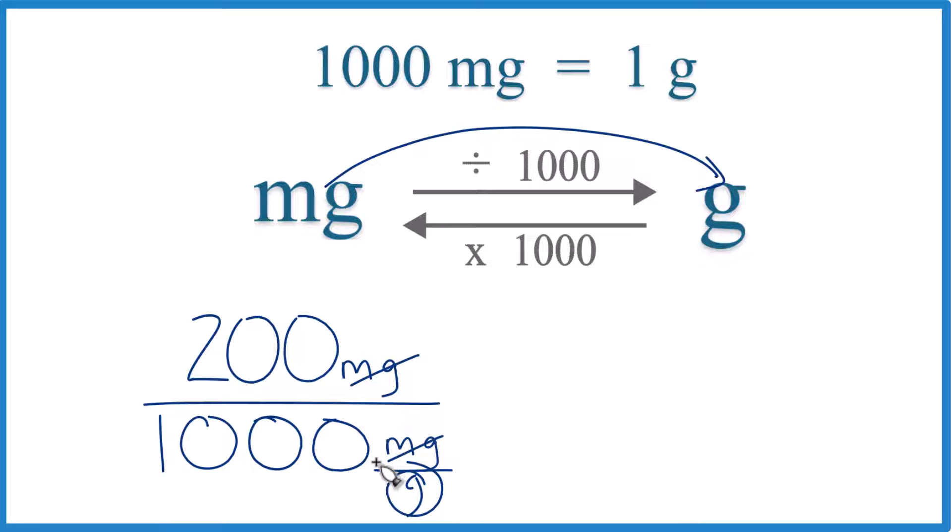So let's move the decimal point 1, 2, 3. So now we're just dividing by 1. I have to do it up here too, though. 1, 2, 3.